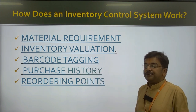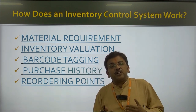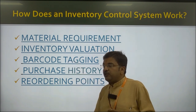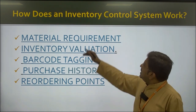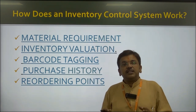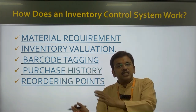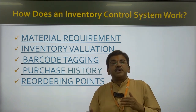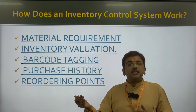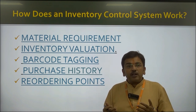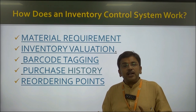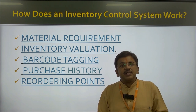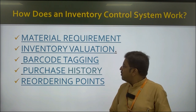Then there is barcode tagging. With the invention of technology, bar coding is used to code the product, and this helps the inventory system know the output and how much product is required. Then purchase history — at what time you purchased something, what is its expiry date, or how much time is required to process the raw material into a finished good. This can easily be understood by the help of purchase history.